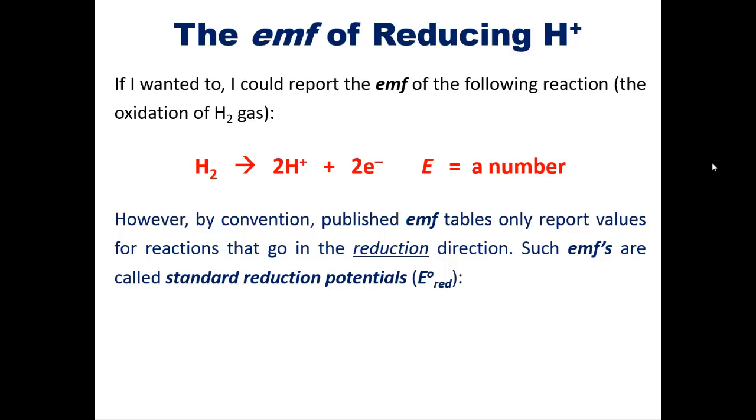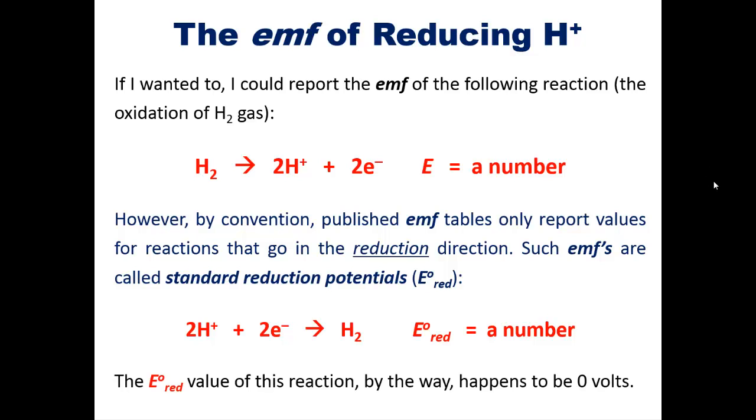Thus, if we looked up this reaction's reduction potential, we would see it in this direction, where E naught sub red would be a number. The E naught sub red value for this reaction, by the way, happens to be zero volts.